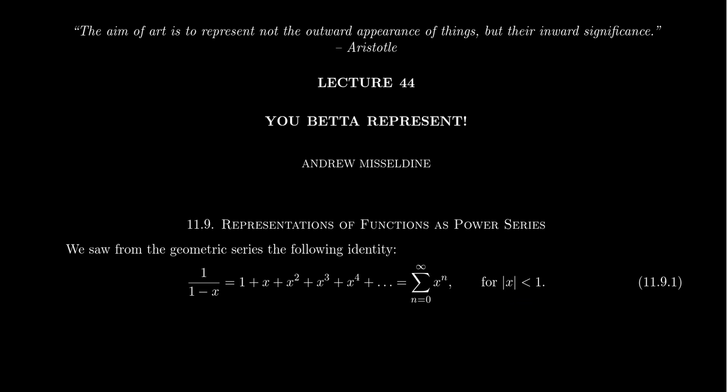And on that domain, for this interval negative 1 to 1, we see that our geometric series is equal to the rational function 1 over 1 minus x. And in particular, this is equality here. This rational function equals this infinite polynomial whenever x's absolute value is less than 1. So this is equality.